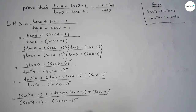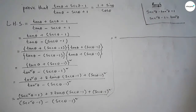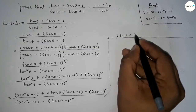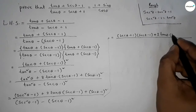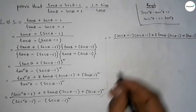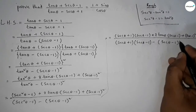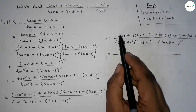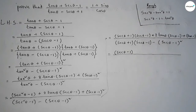Now expanding sec²θ - 1 using the difference of squares: we can write (sec θ + 1)(sec θ - 1). The other terms remain the same. Similarly, in the denominator, we write (sec θ + 1)(sec θ - 1), and the other terms remain the same.